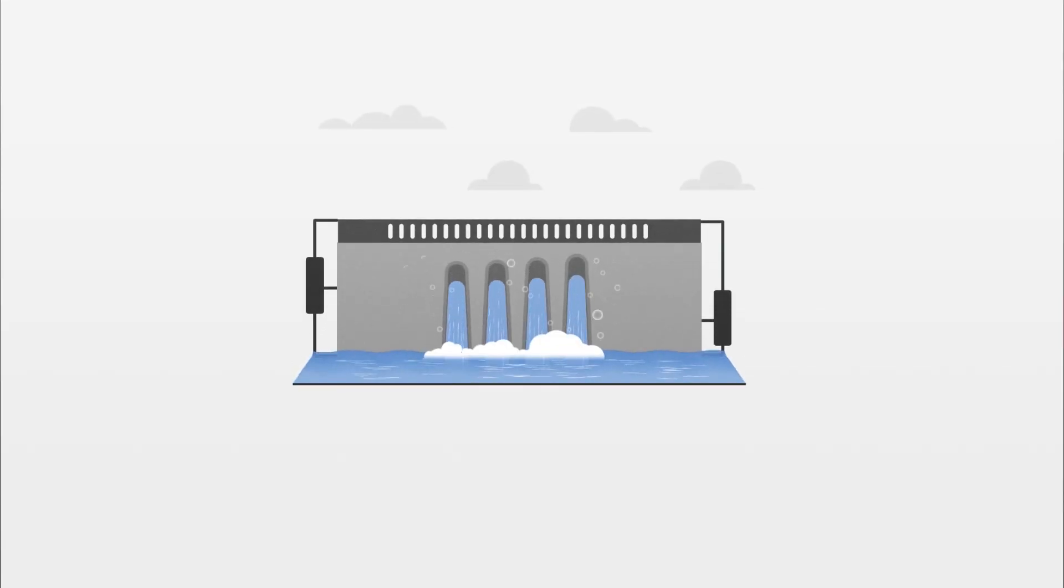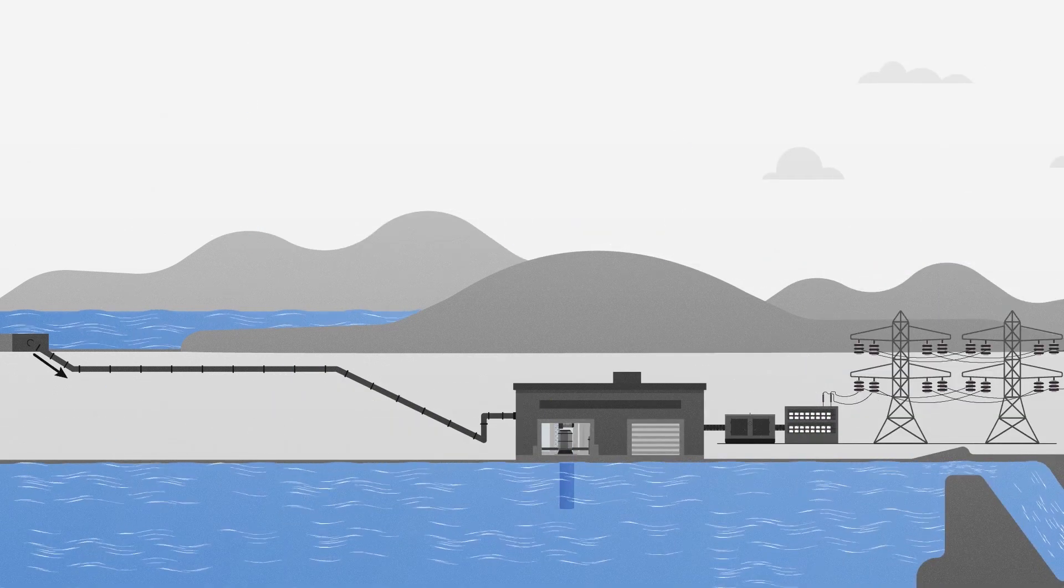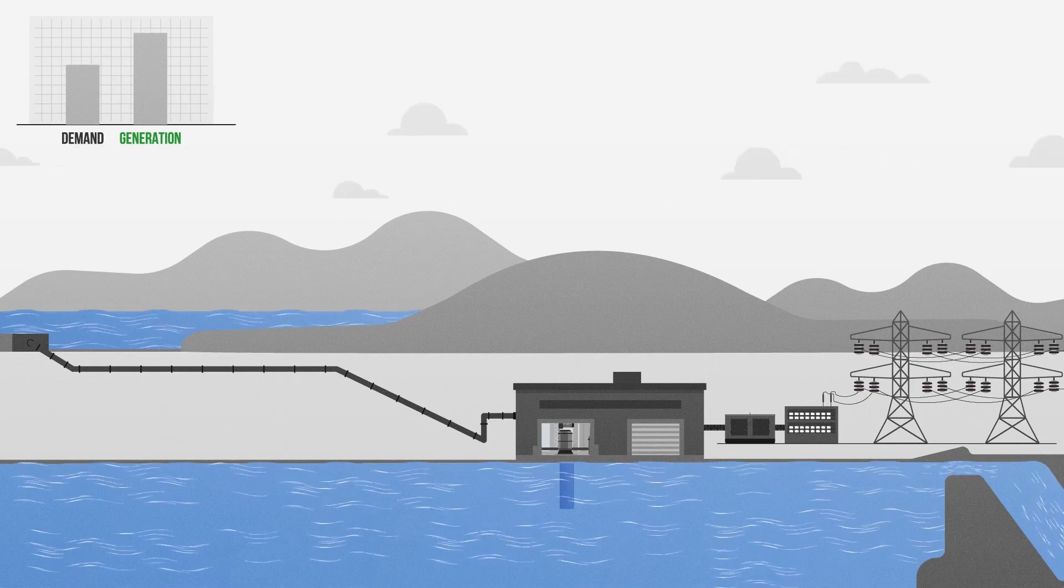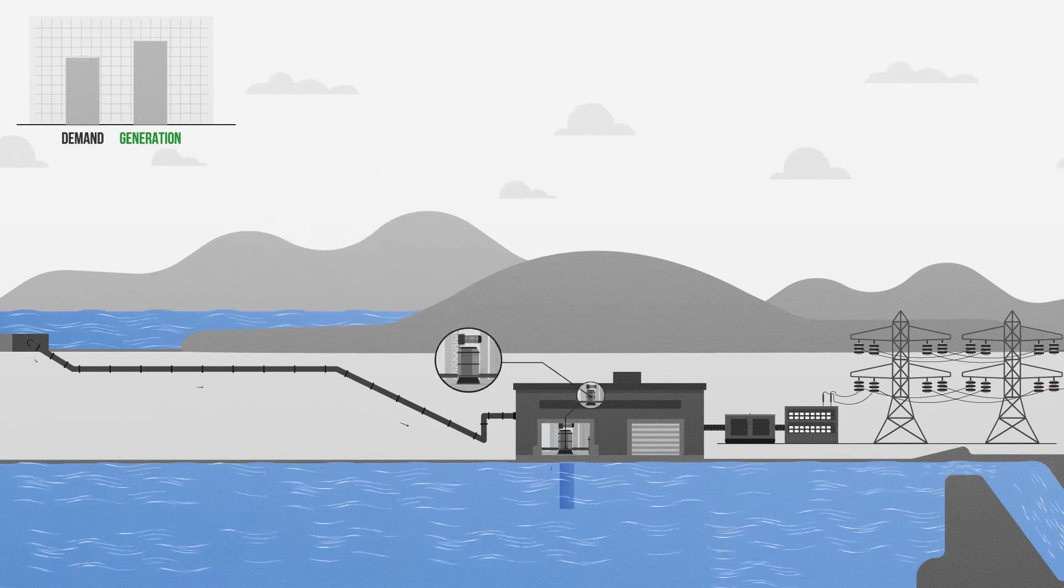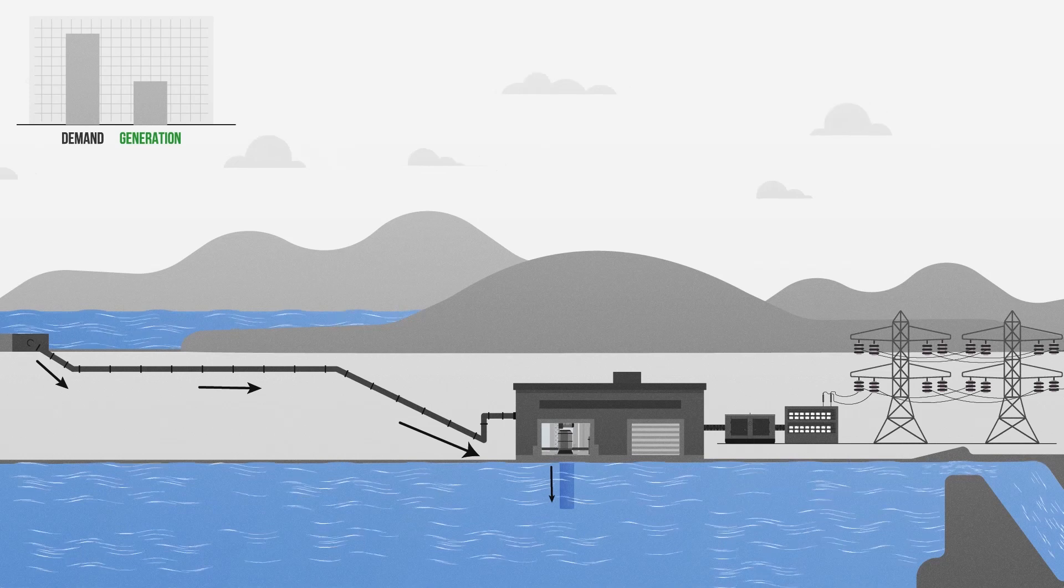The last type of hydroelectricity is known as pumped storage. This system takes advantage of the high and low periods of power demand. When there is low demand for electricity but excess in generation, the excess electricity in the system is used to pump water into a reservoir. When the demand for electricity is high, that water is then released down through turbines and generates electricity for consumption.